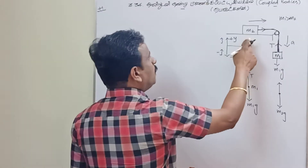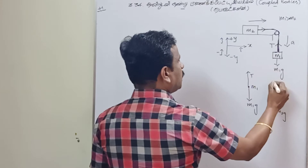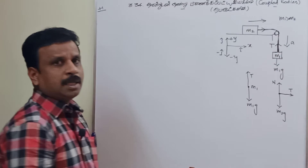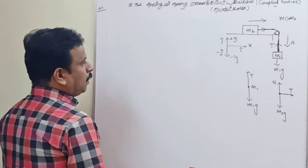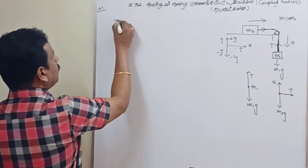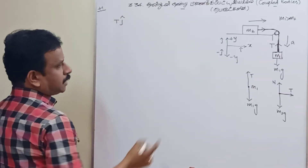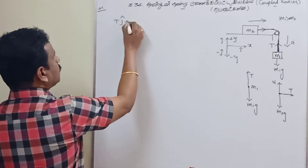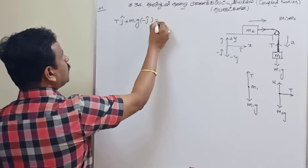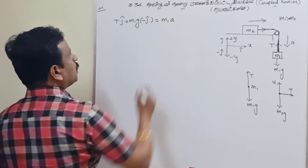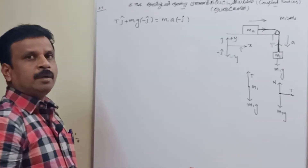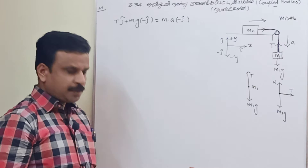For the block m2 on the table, m2·g acts downward, a normal force N from the table acts upward, and tension T acts along the positive x-axis — that is, in the direction of motion. Now let's write the equation for this block. The net force equation gives: T·(i-cap) plus m1·g·(minus j-cap) equals m1·a·(minus j-cap) by Newton's second law.